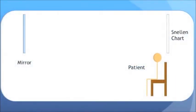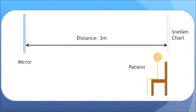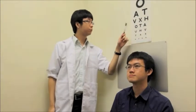In certain cases where the patient cannot be positioned 6 metres from the test chart, the patient can instead be positioned to face a mirror 3 metres away, with the Snellen chart placed behind him and above his head. The patient would read the image of the chart from the mirror and still see it at a distance of 6 metres.